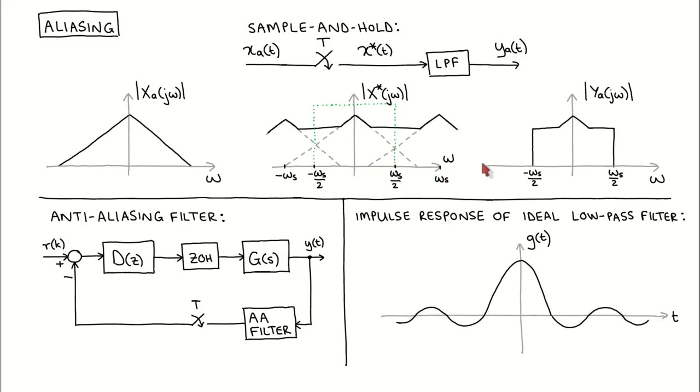When this sampled signal is passed through an ideal low-pass filter with cutoff frequency of half the sampling frequency, then this is the spectrum of the output signal. It is clear that, even with an ideal low-pass filter, the input signal cannot perfectly be recovered, and that the high frequency components of the input signal has corrupted the low frequency regions of the spectrum. This is called aliasing, and is something we want to avoid in a control system.